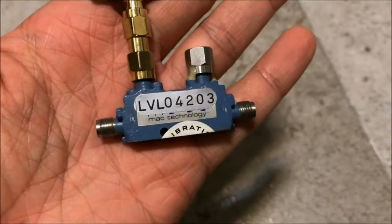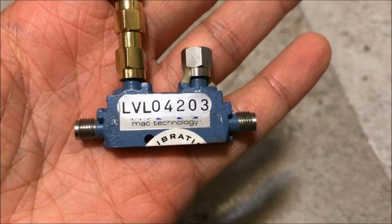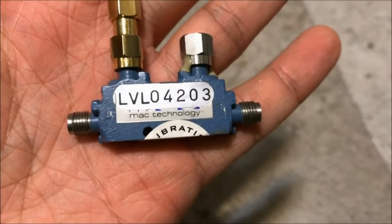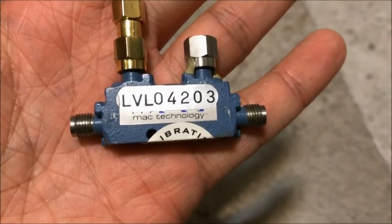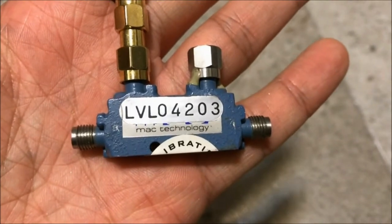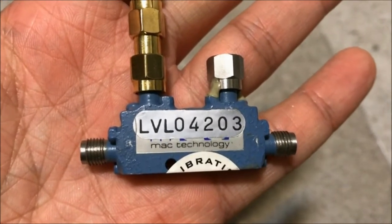This is a directional coupler from Mac technology, and it could handle up to 60GHz. You could find a similar coupler like this one on eBay. And the cheapest one, if you'd like to get one brand new, would be from Mini Circuits.